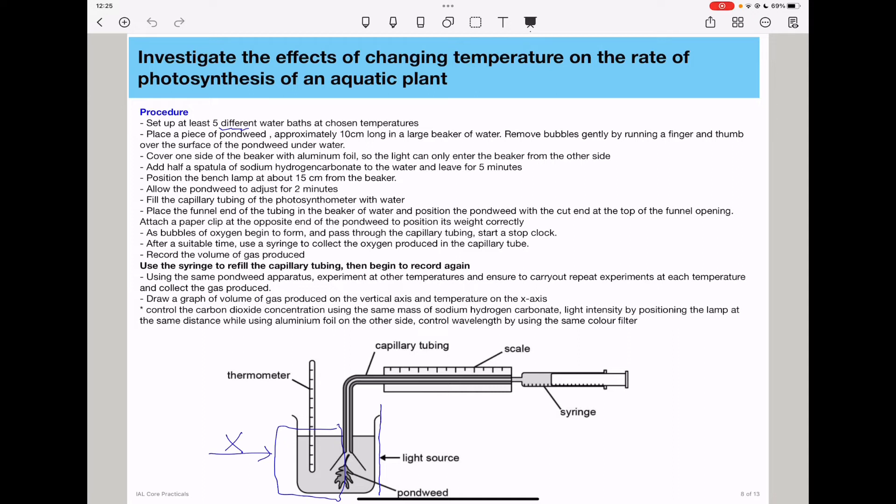Starting a stop clock will ensure that we can calculate the rate of photosynthesis appropriately if we have the time for which photosynthesis was carried out. So after that suitable time, use a syringe to collect the oxygen produced in the capillary tube and record the volume of gas produced.